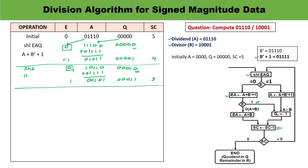In the next step, perform shift left again. After shift left, A becomes 01010 and Q becomes 0110, with 0 introduced at the last position.